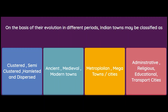On the basis of their evolution in different periods, Indian towns may be classified as ancient, medieval, or modern towns. This is different from classification by function — administrative, religious, educational, or transport cities — or by size — metropolitan or mega towns. Classification by evolution refers to ancient, medieval, and modern periods.